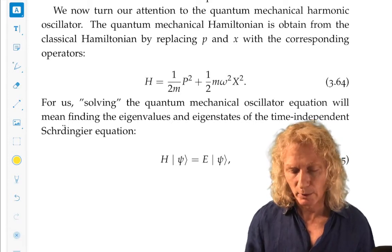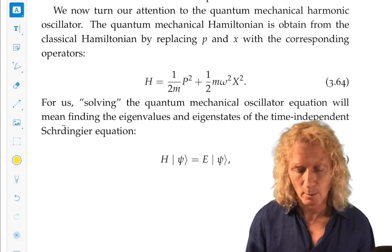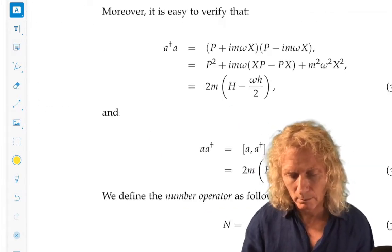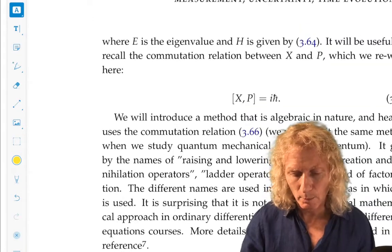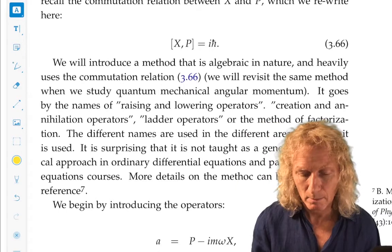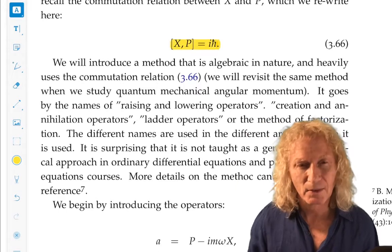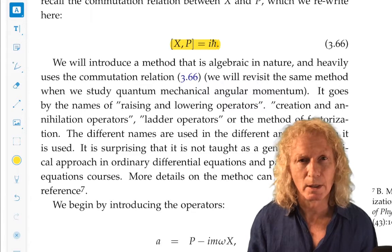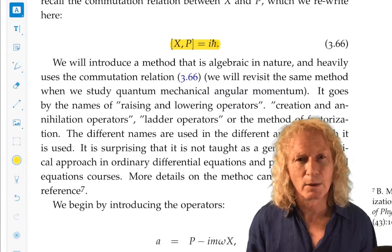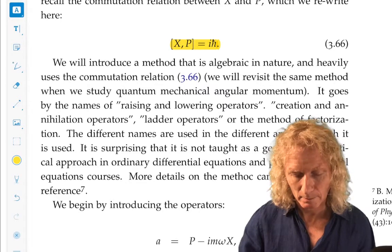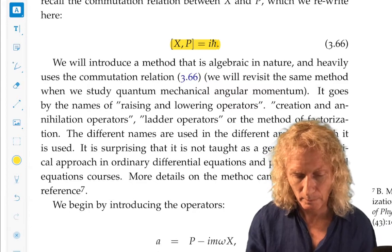Originally, I believe this was due to Dirac for the harmonic oscillator. And interestingly enough, the thing to keep in mind is that this entire method essentially uses nothing more than this commutation relation in very different ways over and over and over again. Once we get through it, you should come back and think about that.